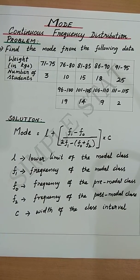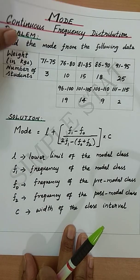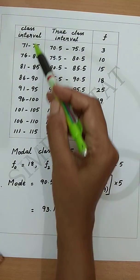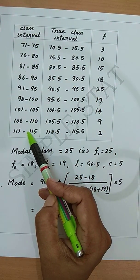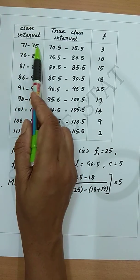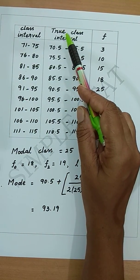Let's now proceed with the calculation part. First write the given class interval. Here we are given an inclusive type class interval, therefore first step is to